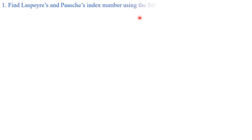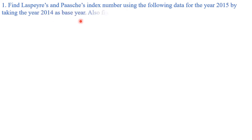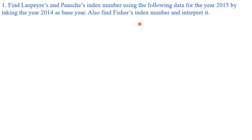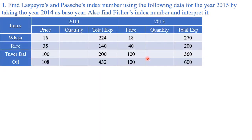First question: find Laspeyres' and Paasche's index number using the following data for the year 2015, taking the year 2014 as the base year. Also find Fisher's index number. Basically we need to calculate all of them. The blank columns have been added by me.